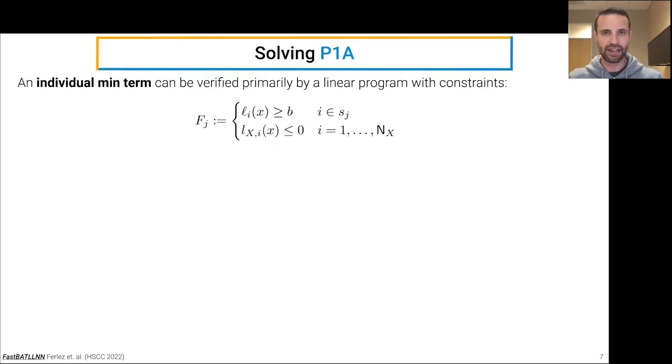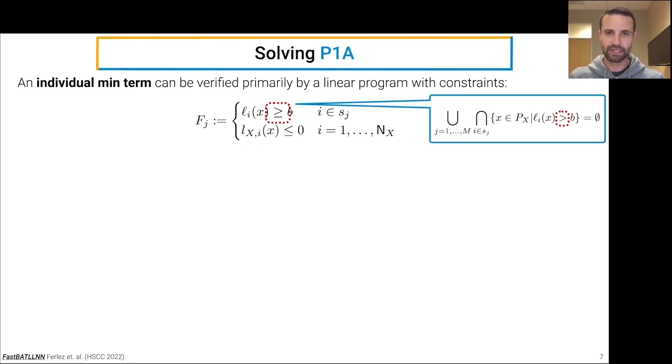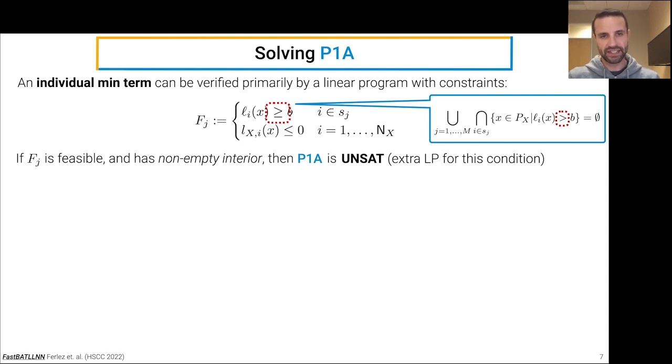So we can solve problem 1A, or verify problem 1A, in terms of each of its individual min terms by formulating a set of linear constraints, F_j, associated with a particular selector set. And so each of these F_j's has one linear constraint for each of the local linear functions in its associated selector set, and one linear constraint for each of the half-spaces that specify the input constraint polytope. So in particular, you'll also note that we've converted the greater than from the half-spaces in the previous slide to a greater than or equal here. So we can determine whether this F_j has any points in it using a linear program. This comes at the expense of just having to check further that it has a non-empty interior. This just costs us an extra LP per selector set.